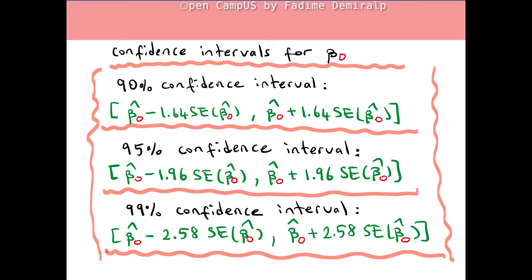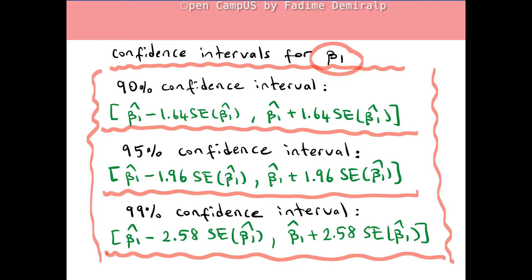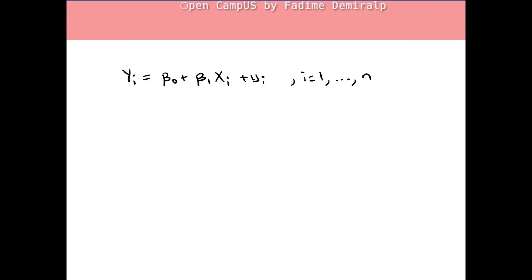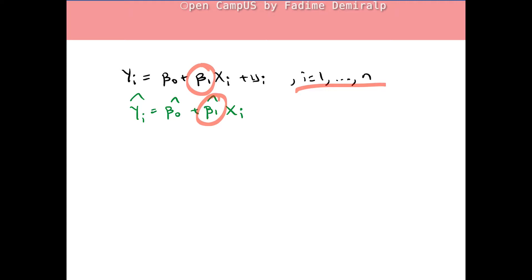Let's discuss confidence intervals for beta 1. When we run a regression using a random sample, we obtain estimates of the intercept coefficient beta naught and an estimate of the slope coefficient beta 1. We don't find the true value of beta 1 from the sample, but an estimate. As discussed in the previous video, Chapter 5 Part 1, the estimate has sampling uncertainty.